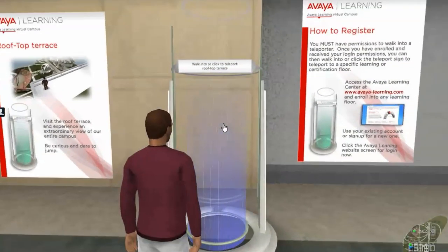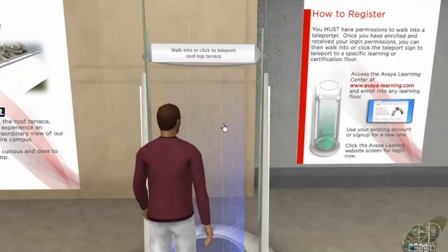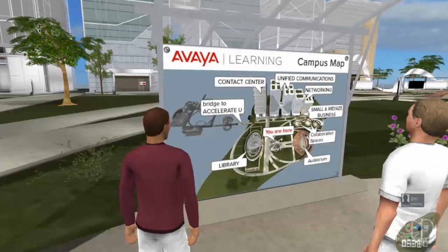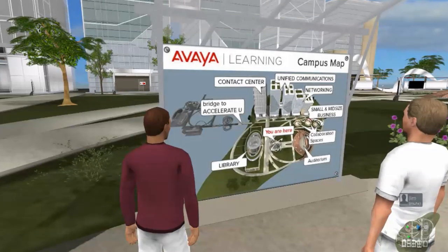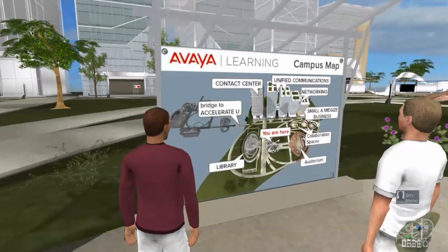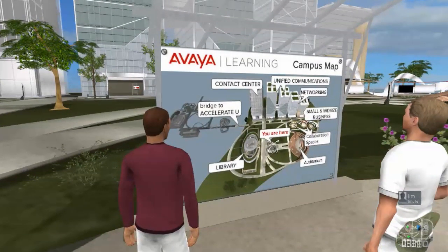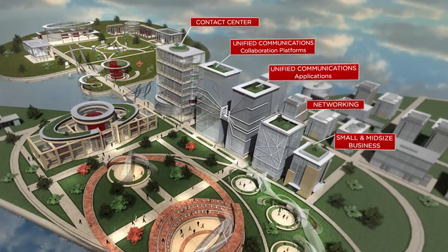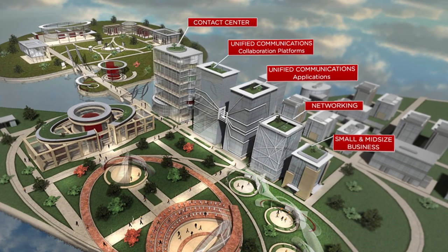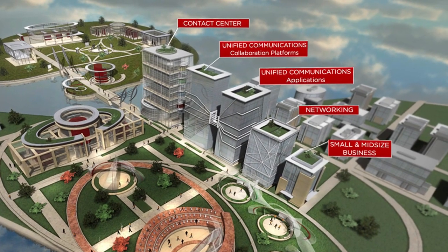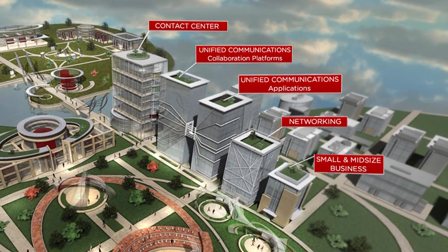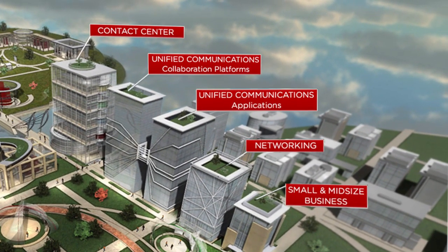Empowering you to get the most from your Avaya communications investment, the Avaya Learning Virtual Campus includes five main buildings filled with learning materials organized by solution: contact center, unified communications collaboration platforms, unified communications applications, networking, and small and medium-sized business.